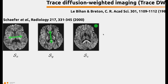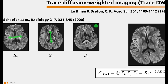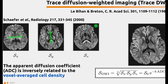In addition to these, you can acquire a non-diffusion weighted image, S0. Once you've done so, you can compute this SDWI signal, which is the cubic root of the product of Sx, Sy, and Sz, and relate it to the S0 signal that you acquired. You can see that this SDWI is S0 with a decaying exponential factor given by the B value, which is the overall strength of the diffusion encoding, and this ADC, which is the apparent diffusion coefficient of a given voxel.